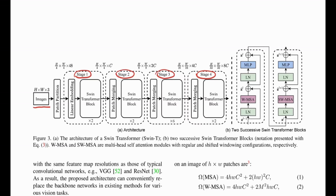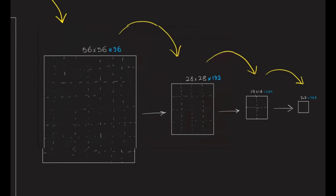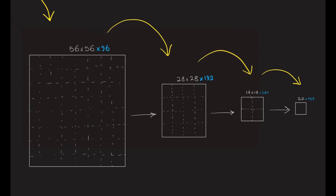Looking at the paper, we can see that as we go forward through the stages the spatial size is shrinking and the number of channels is increasing — similar to a hierarchical structure in CNNs. At the beginning we have H/4 × W/4 × C, and as we go forward the spatial size shrinks while channel count increases.